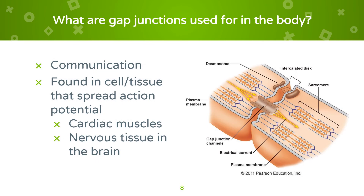Gap junctions are used for communication between cells in the body. They can be found in tissues that spread action potential, such as the cardiac muscles. By transmitting ions through the gap junctions, the heart can continue beating in a synchronized motion.